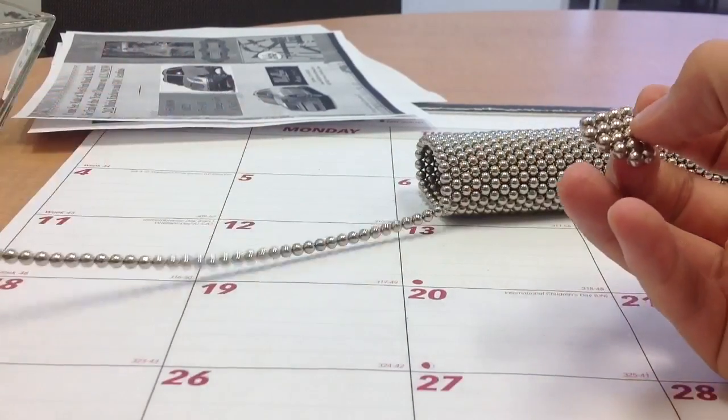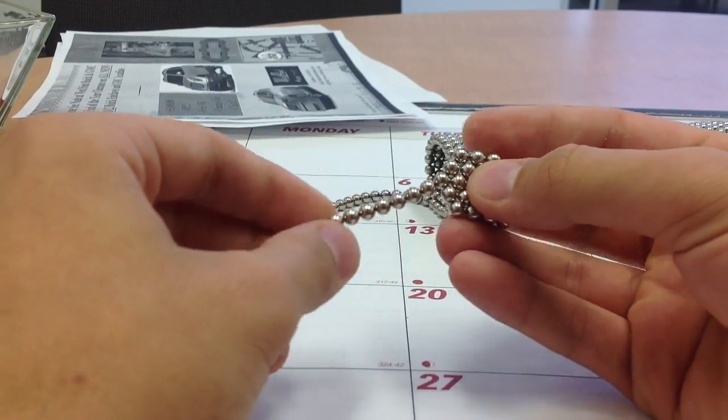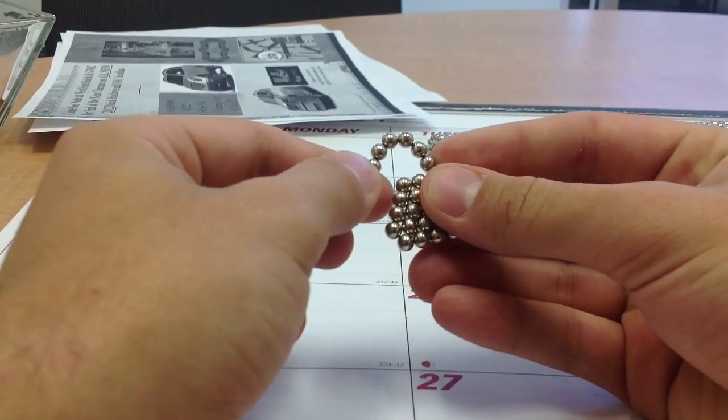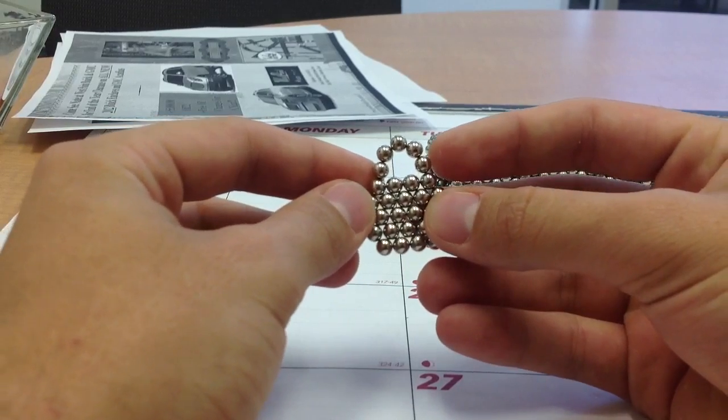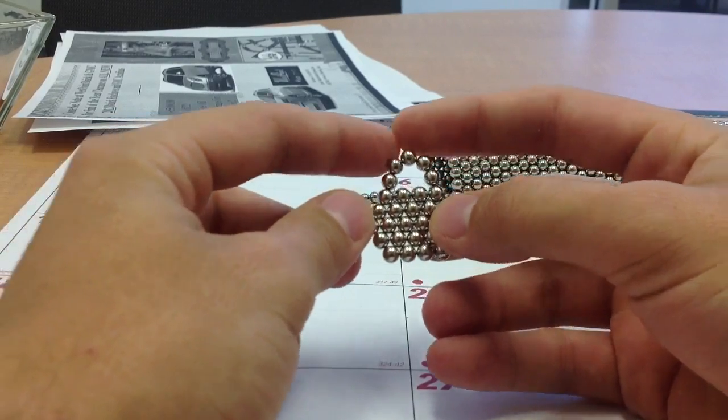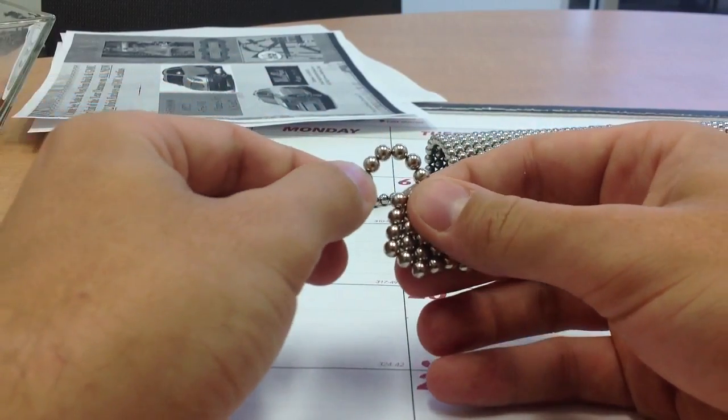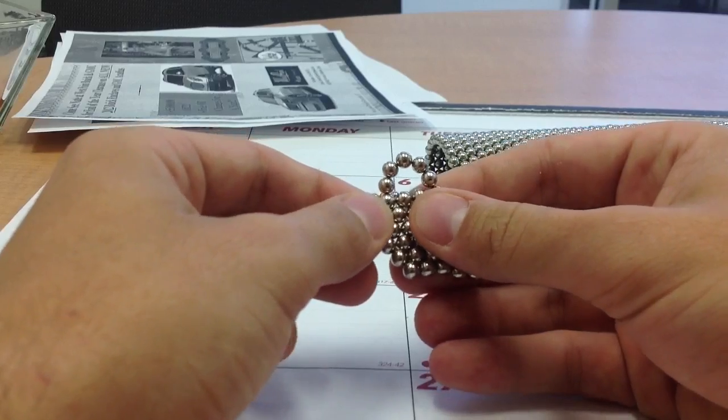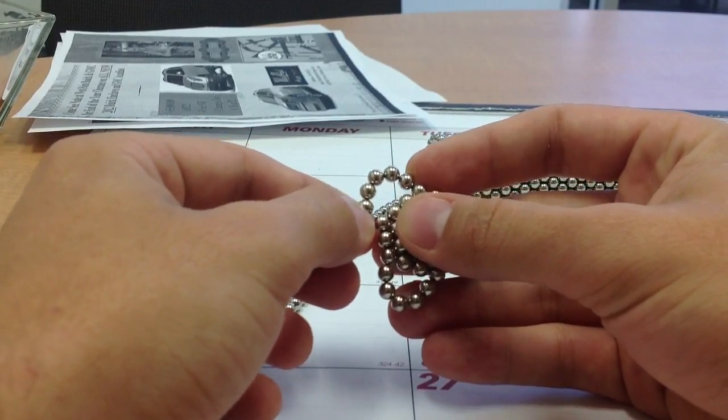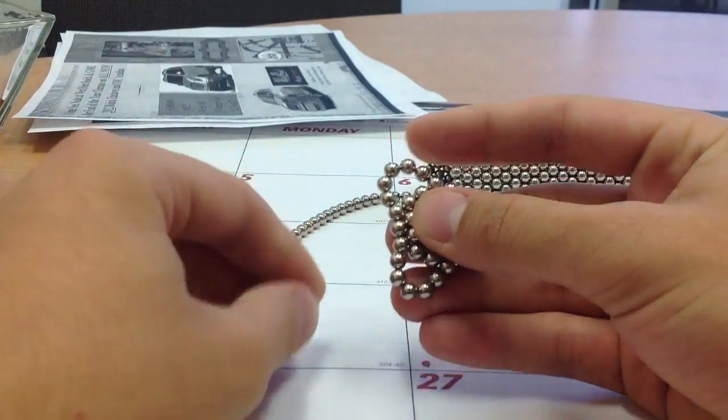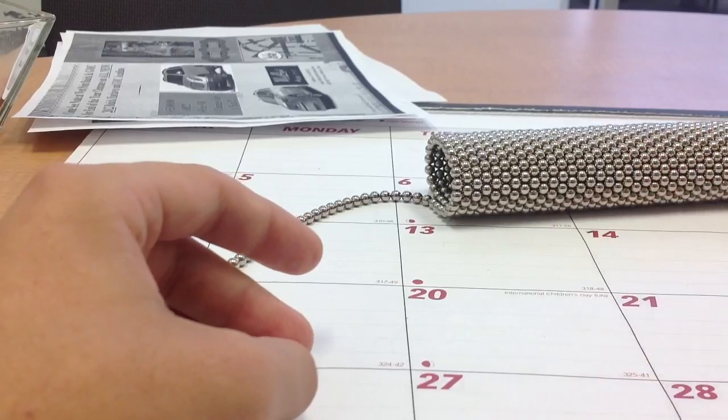And then what you do is you take your string and you attach it to the side here and you make a loop like that. It's going to have five balls connecting up in the air like that. And go across to the next side and you make the loop again and you finish it off right here. And that's going to be your base. Now you set that aside.